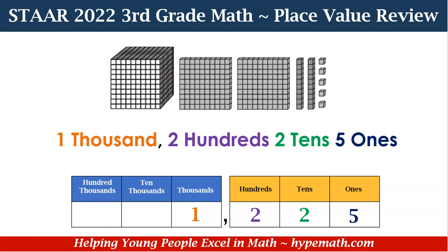We have our number, which is 1,225. If you notice in this slide, we have it in block form, we also have it in word form, and also in our place value chart. For the block form, you see we have one 1,000 block, two hundreds blocks, two tens blocks, and five ones blocks. You see that we also have it in number and written form: 1,000, two hundreds, two tens, five ones.